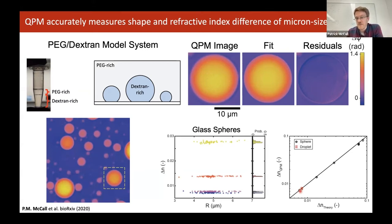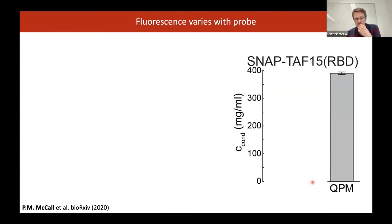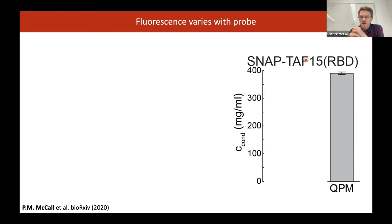Importantly, we see linearity over a really broad range of refractive index differences, which is good because this is actually the range of differences we see for protein droplets. Moving then to protein droplets, we looked at the RNA binding domain of a protein called TA15 and measured the concentration inside to be just shy of 400 milligrams per milliliter — which is on the low end of protein crystal concentrations — and a volume fraction of about 30%. So it's very, very dense.